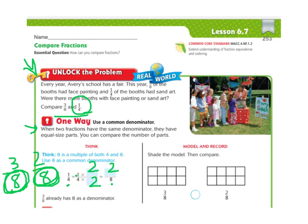So I can shade in my model over here to show three-eighths, one, two, three, and shade in my model over here to show two-eighths. And I easily can look at my numerators and see that a three is greater than a two. So three-eighths is greater than two-eighths. So that's the first way to compare fractions. You change them to have common denominators.